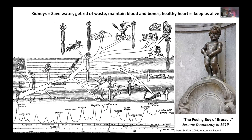Why are we interested in kidneys? Kidneys save water, get rid of waste, maintain our blood and bones, and keep us alive. As land mammals, we've undergone several evolutionary adaptations to enable life on land — without the kidneys and the intricate evolution of the basic nephron structure, we wouldn't be able to survive on land conserving water. We have two kidneys, one on each side. The kidney is a bean-shaped structure with a cortex and a medulla, with elongated structures that help conserve water.